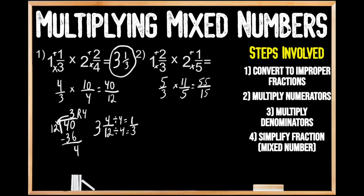Moving on to step number 4, we're going to simplify this fraction. Once again we have an improper fraction, so we need to convert it into a mixed number by dividing the numerator — which is 55 — by the denominator — which is 15. We can't make a group of 15 out of 5, so moving left to right we see we can make 3 whole groups of 15 out of 55. We write 3 up top, multiply: 3 times 15 gives us 45, then subtract: 55 minus 45 leaves us 10. With no numbers to bring down, we're done. So 55 divided by 15 gives us 3 with a remainder of 10.